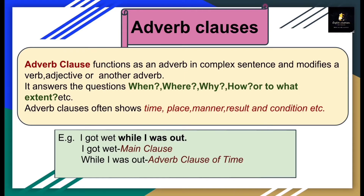Adverb clause functions as an adverb in a complex sentence and modifies a verb, adjective, or another adverb. It answers the questions when, where, why, how, or to what extent. In noun clauses we asked the question 'what' to our main verb. In adjective clauses we asked 'which' to our noun or pronoun. And in adverb clauses, we ask when, where, why, how, or to what extent.